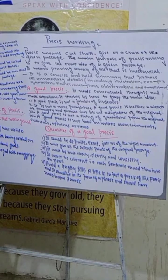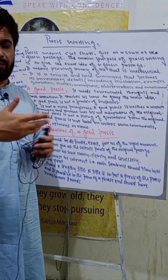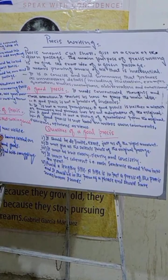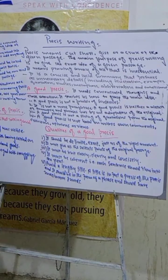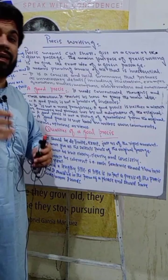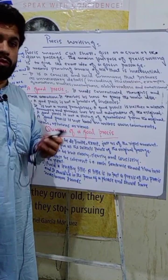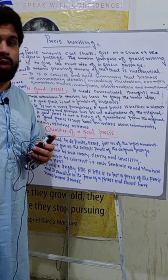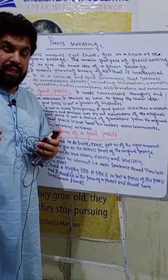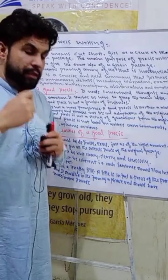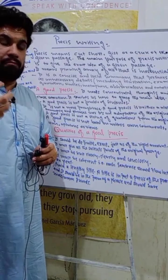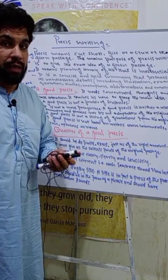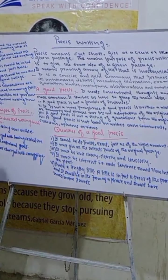Summarize only what the author says — do not add anything from yourself. The precis should be written in third person, similar to how we use indirect/reported speech in narration. It should also be written in past tense — you have to ensure that. A great tip for precis writing students: learn one-word substitutions and memorize them, because they are very important. If you have good command over one-word substitutions, they'll help you make precis in a more calculated manner.